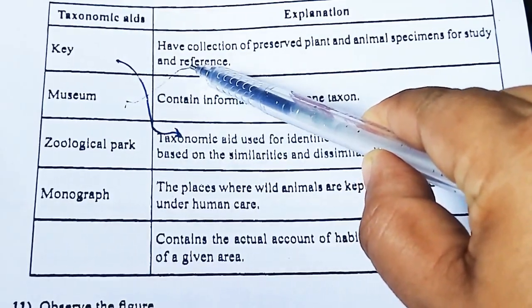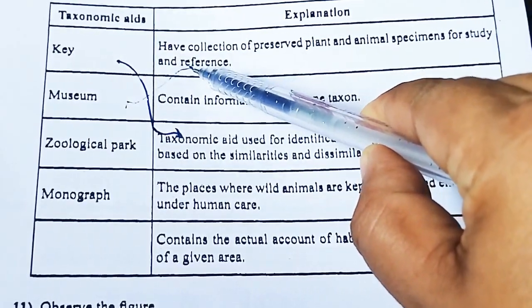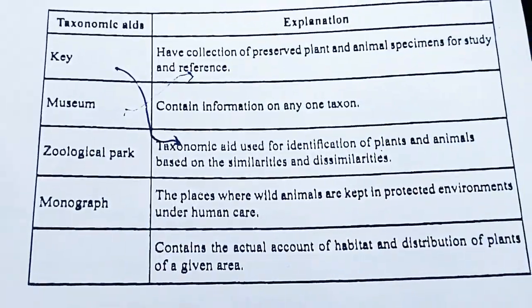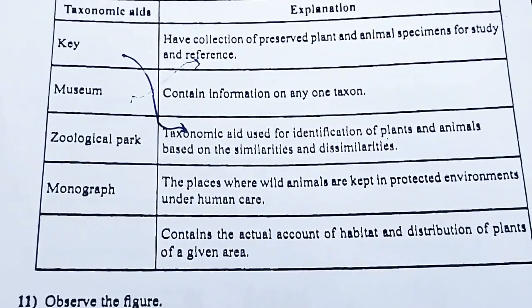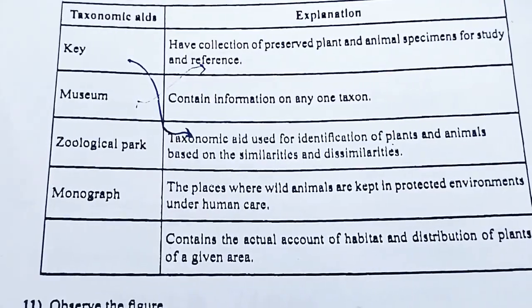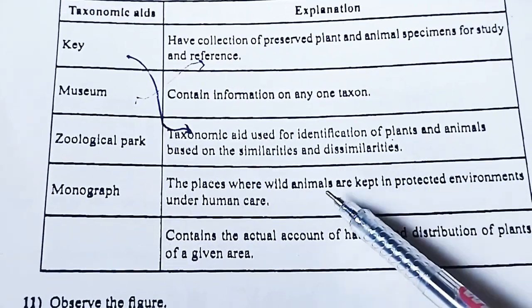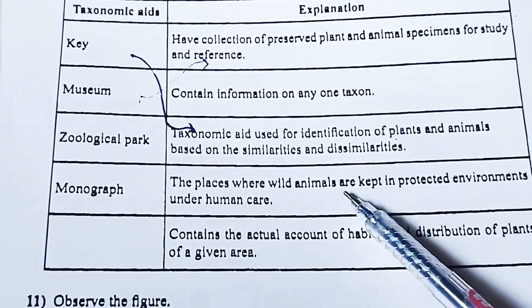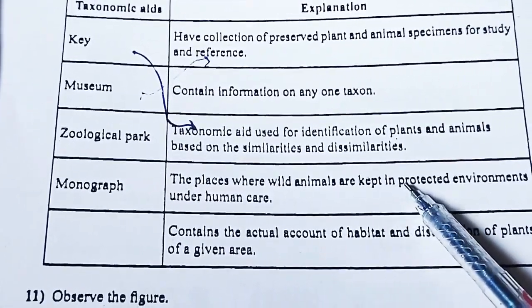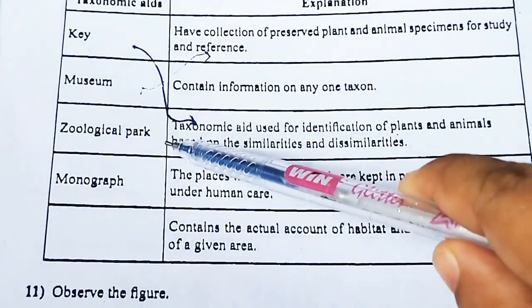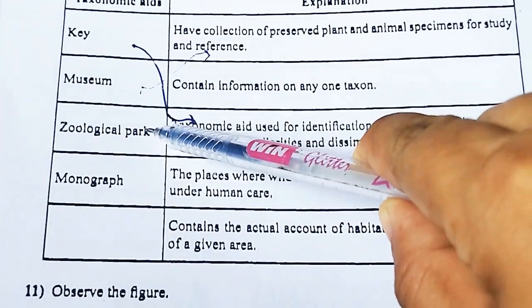A Museum has a collection of preserved plant and animal specimens for study and reference. A Zoological park is a place where wild animals are kept in protected environments under human care.